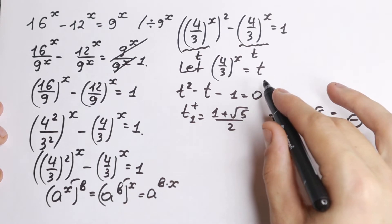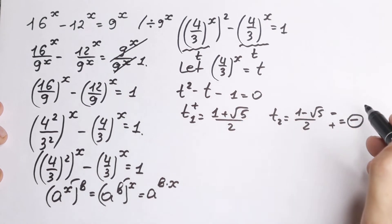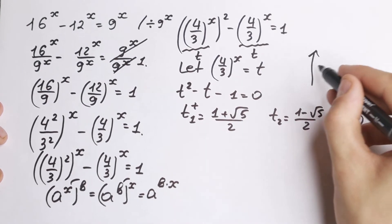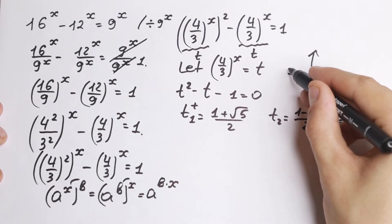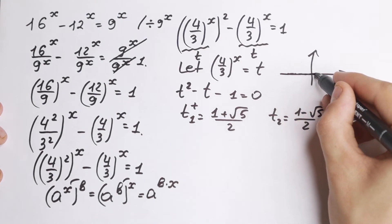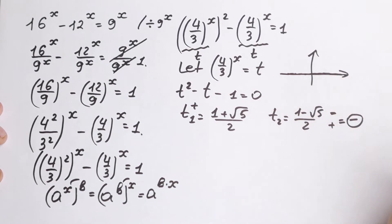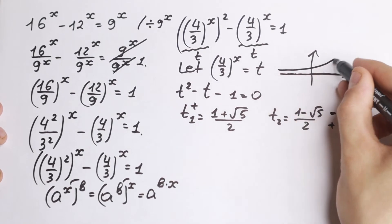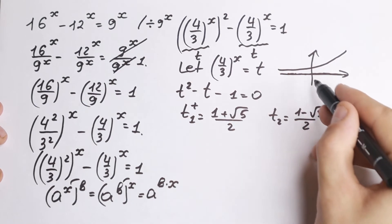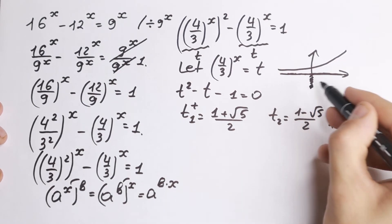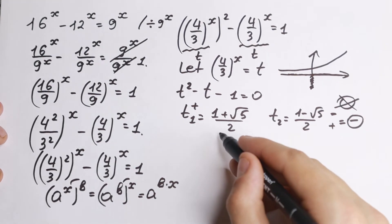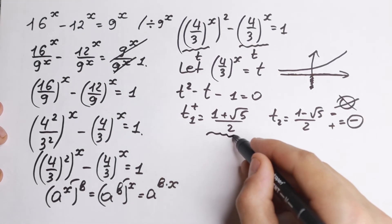Right here we had a substitution: 4 thirds to the x equals t. But 4 thirds to the x is an exponential function, and an exponential function does not take negative values. So we don't need negative values of t — we reject this negative root.